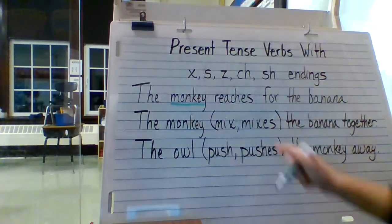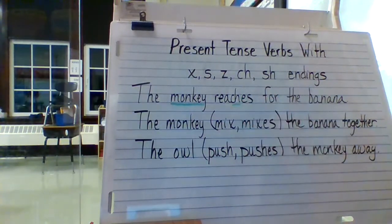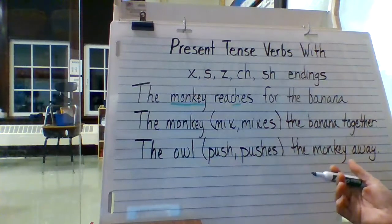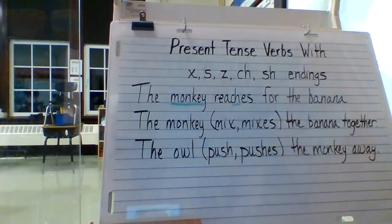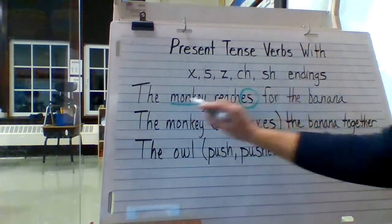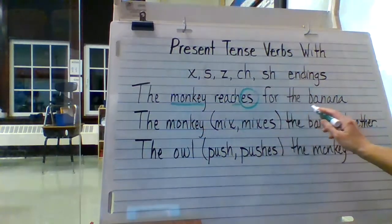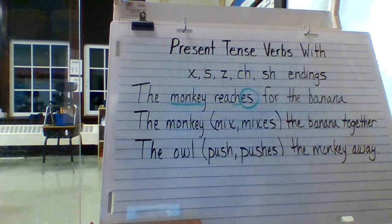And we know that our verb ends with that CH ending. So when we have that CH ending, we need to add ES to the verb rather than just an S. So then we have: the monkey reaches for the banana. And that is an example of a sentence that makes sense.